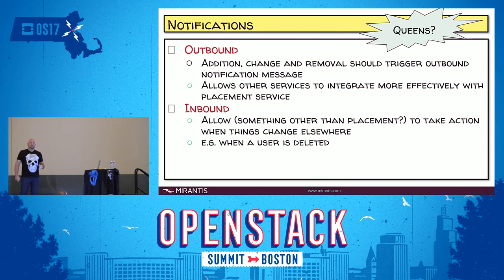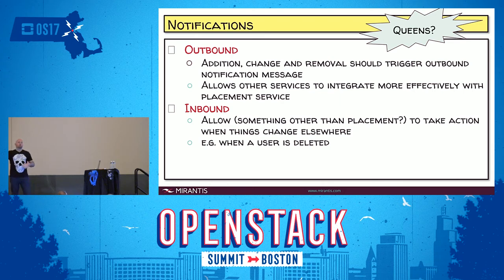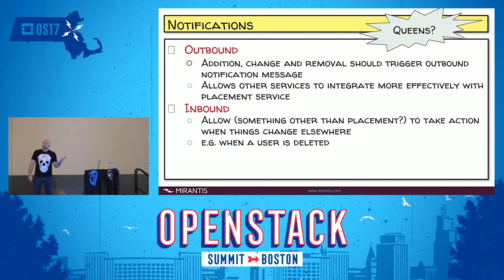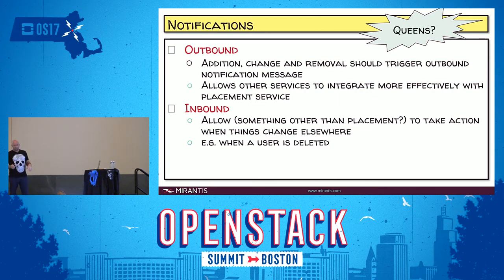Notifications — we'd like outbound notifications so that whenever an allocation is made, a new resource provider is created, or there's a change in inventory, it triggers an outbound notification so other services in the OpenStack ecosystem can consume those notifications and update their state locally. We don't currently have anyone working on this, so if you're interested in contributing to Nova, this is a great place to start. Come find us on IRC.